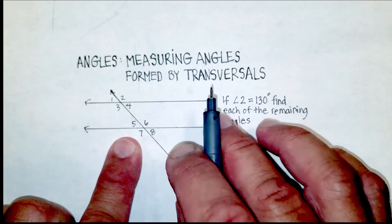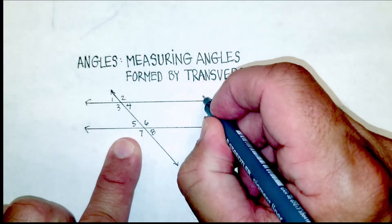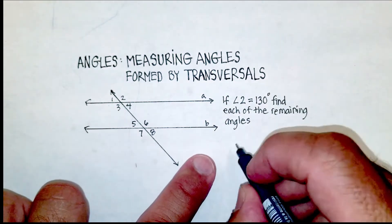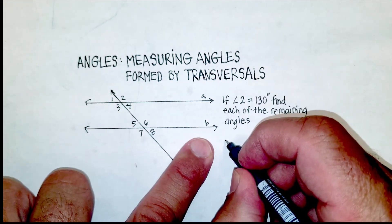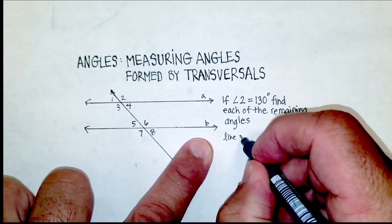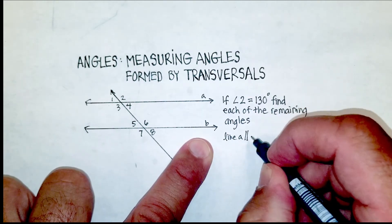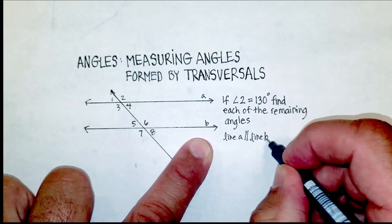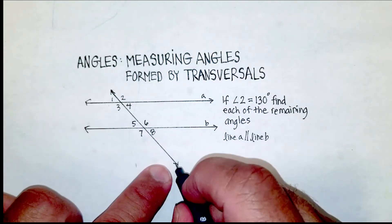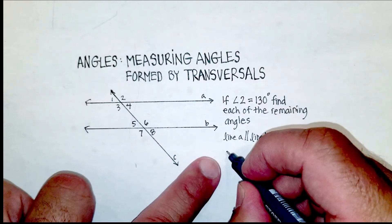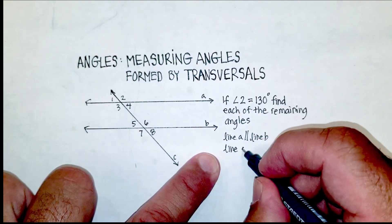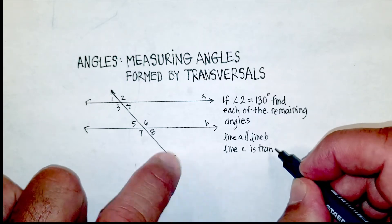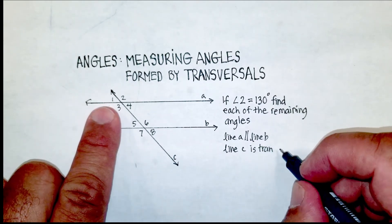So for this problem, this line, line A, and this line, line B, are parallel. We will say line A is parallel to line B. This line, which we will call C, line C is a transversal, which means that it cuts through the two parallel lines.